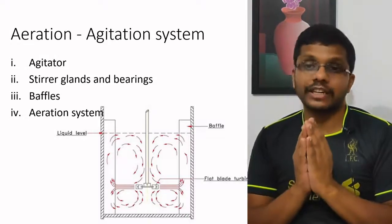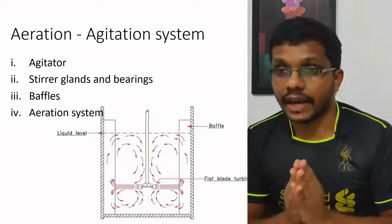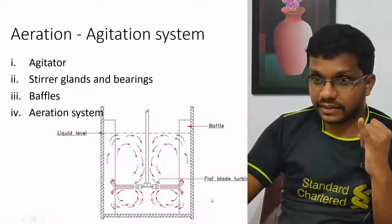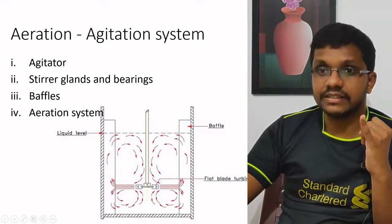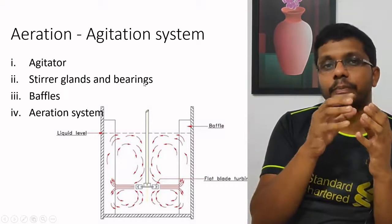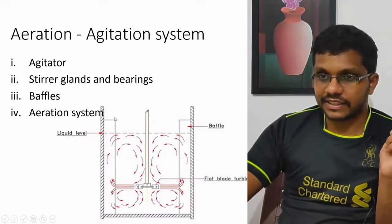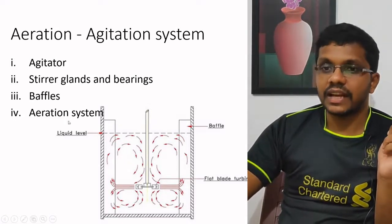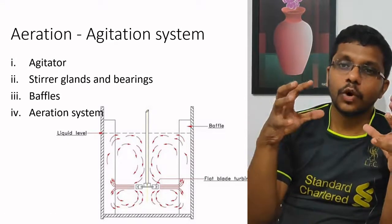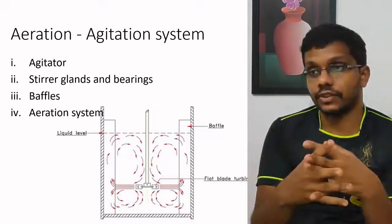In a typical aeration agitation system, there are four different components. The first is the agitator, which does the mixing. Second are sterile glands and bearings, which prevent contamination. Third are baffles. Fourth is the aeration system to provide sufficient oxygen. The combination of these four components provides sufficient aeration and agitation for the microorganisms.